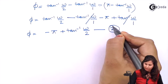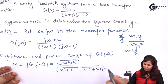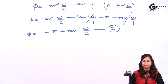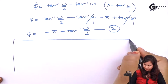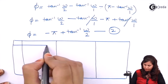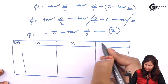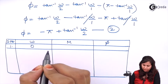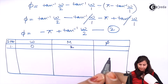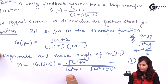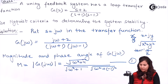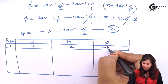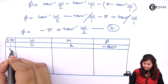This is our phase angle equation (2) and the magnitude equation (1). Using these two equations we form a table. For ω = 0: magnitude = √4/1 = 2, and phase angle = -π + tan⁻¹(0) = -180°.